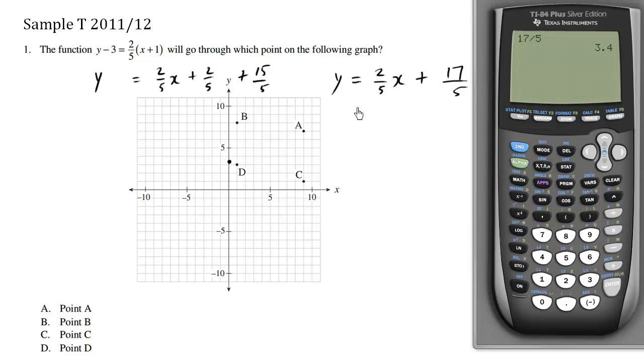A slope of 2 fifths is a little bit kind of flat like this, but still increasing since it's positive. So the only viable point that's going to go through this is point A. So we know that point A is the answer.